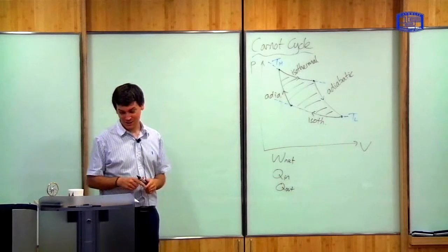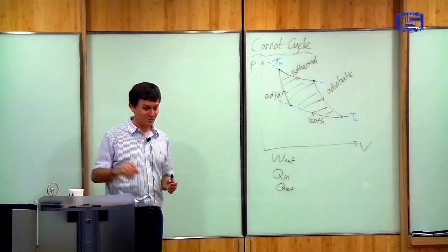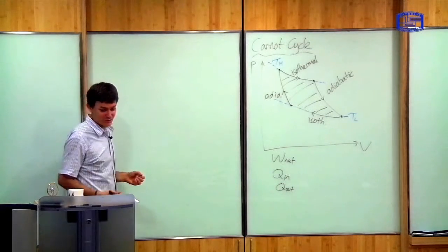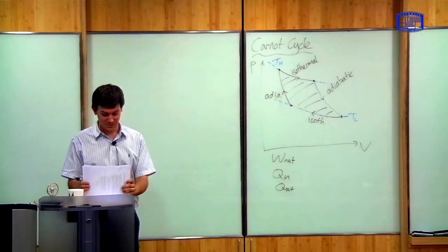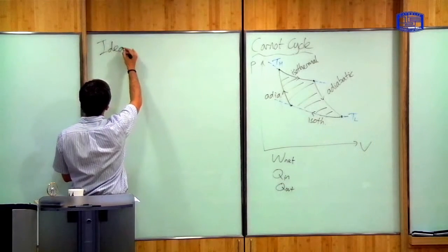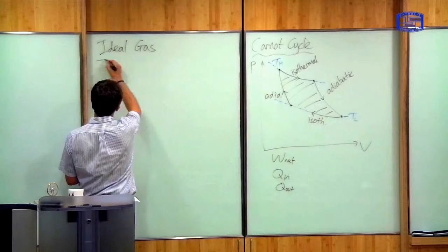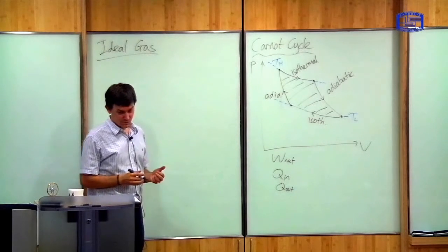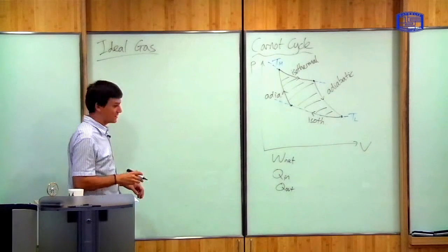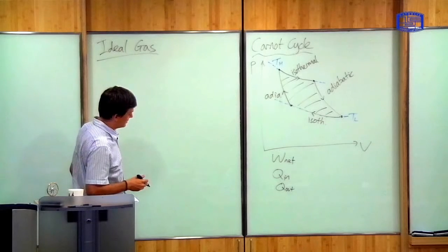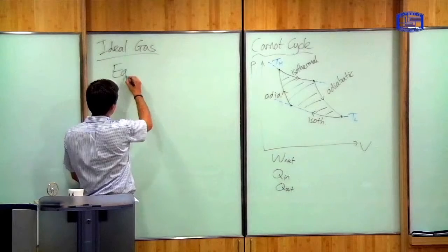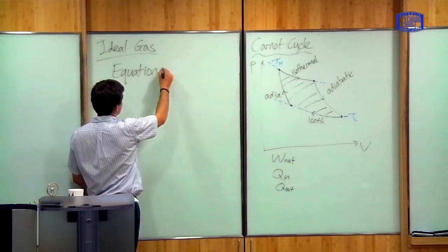For example, the steam in a steam engine, or just air in this little model Stirling engine. So I want to give you some equations which will allow you to do this. We're going to look at one very simple system which is known as the ideal gas. The ideal gas is a kind of idealized, simplified set of equations for how a gas behaves, and there are two equations which tell you everything you need to know, which are known as the equations of state.